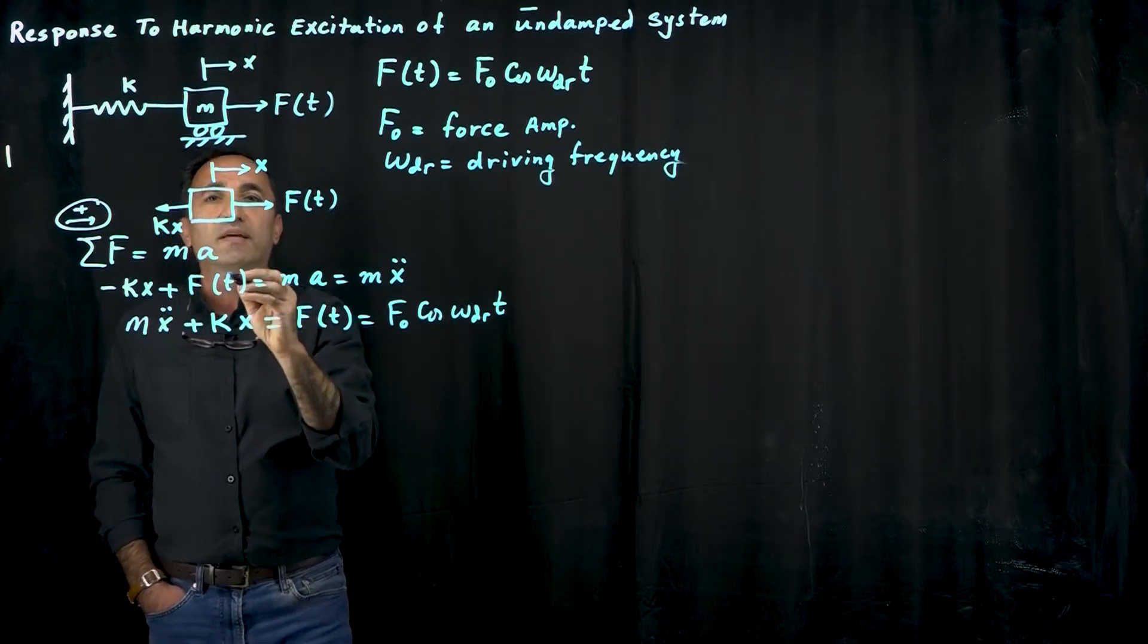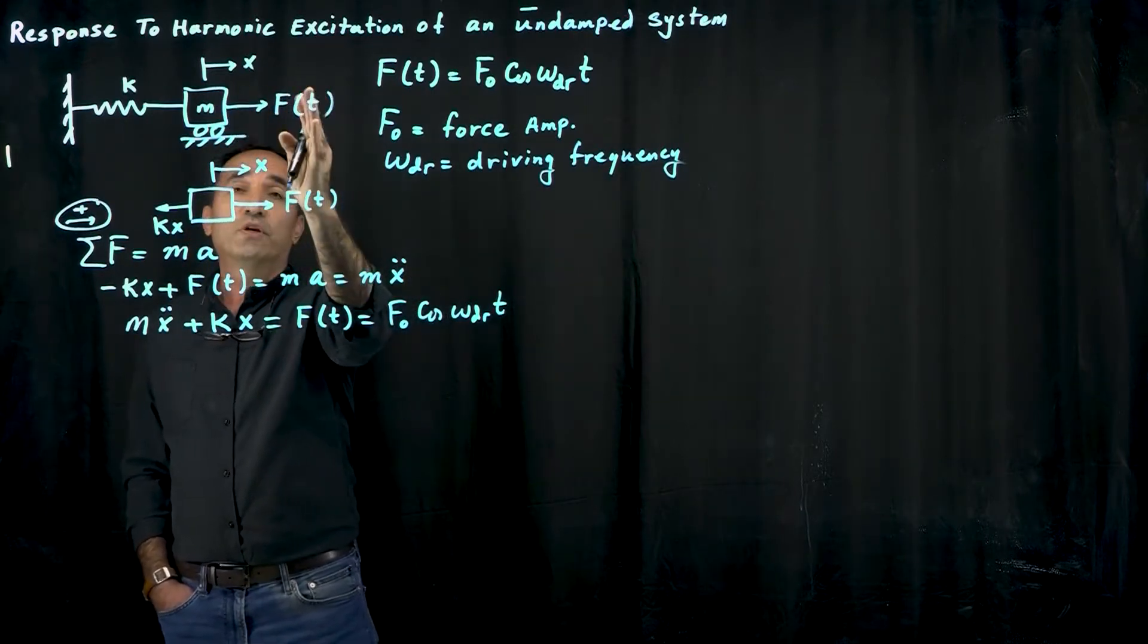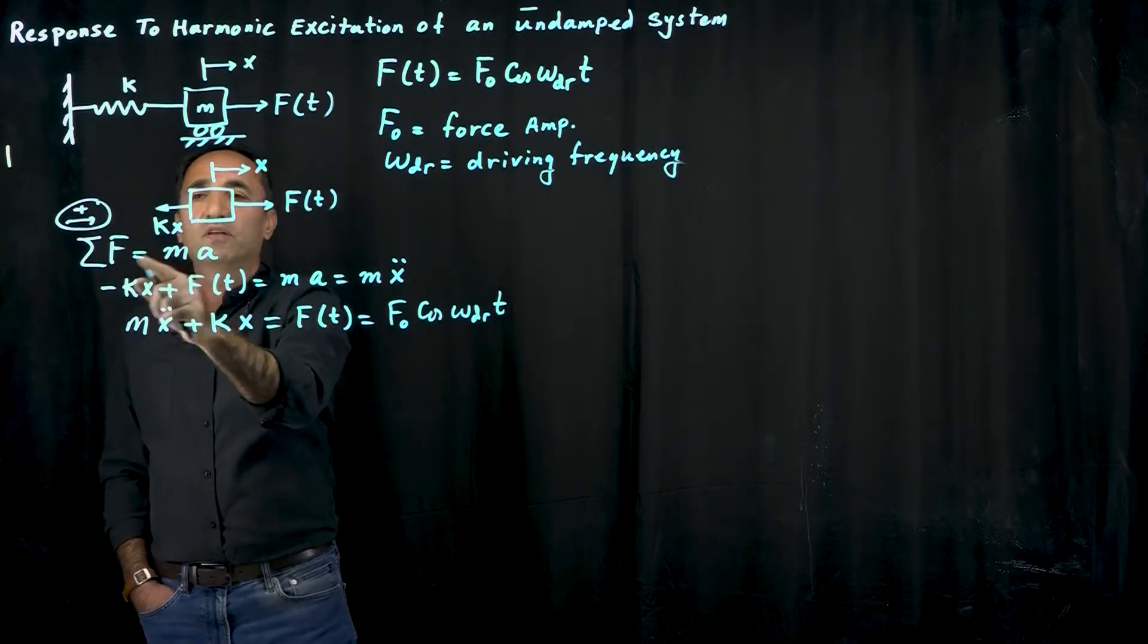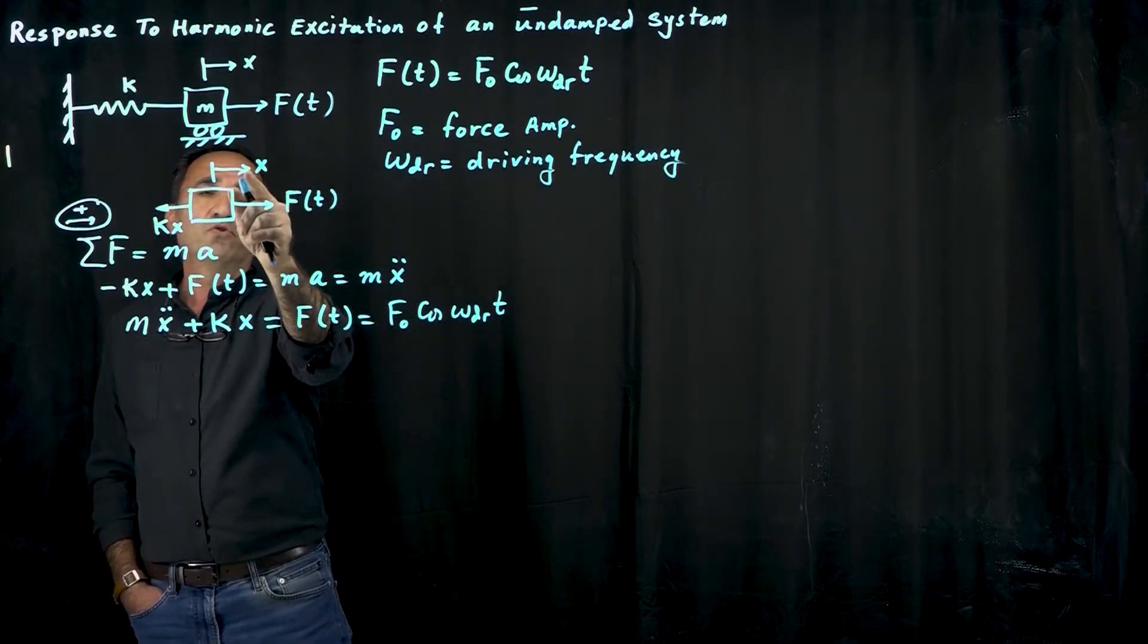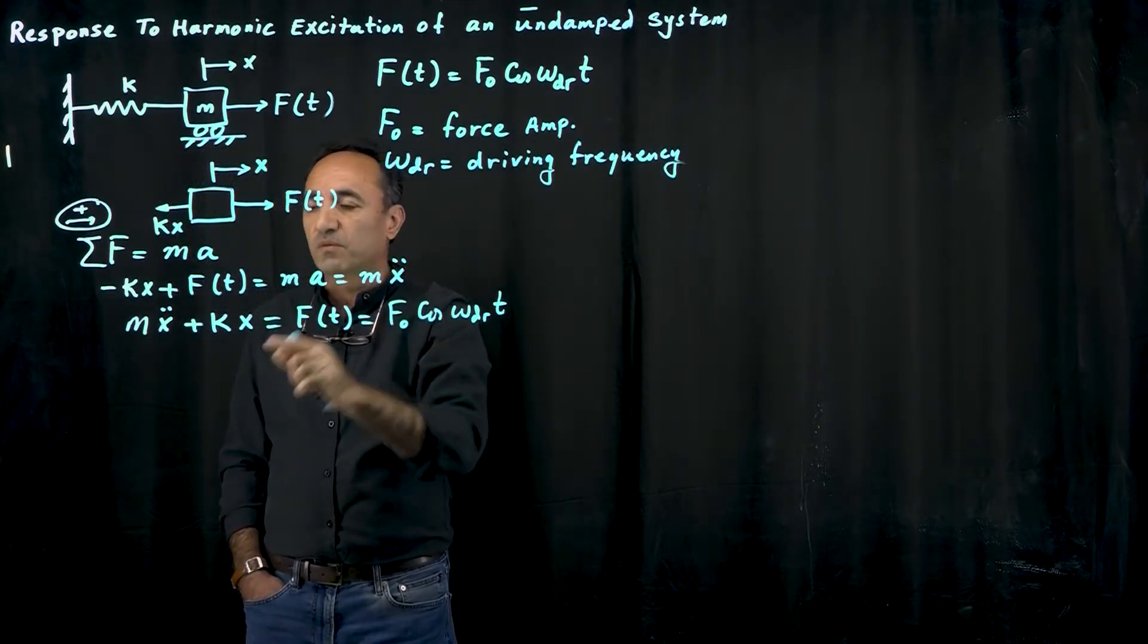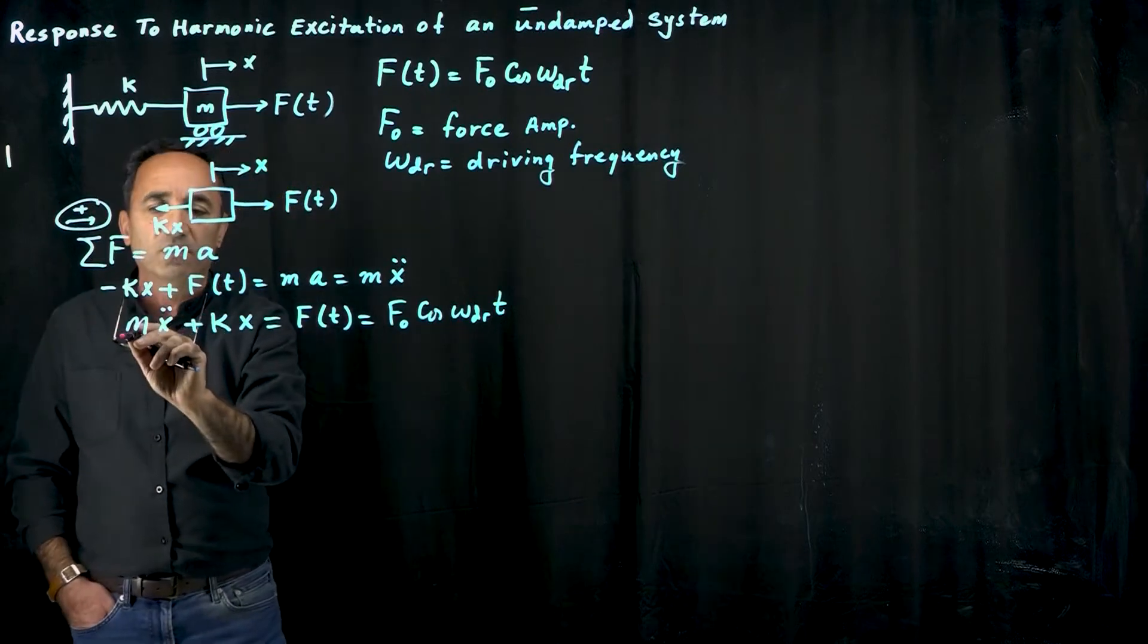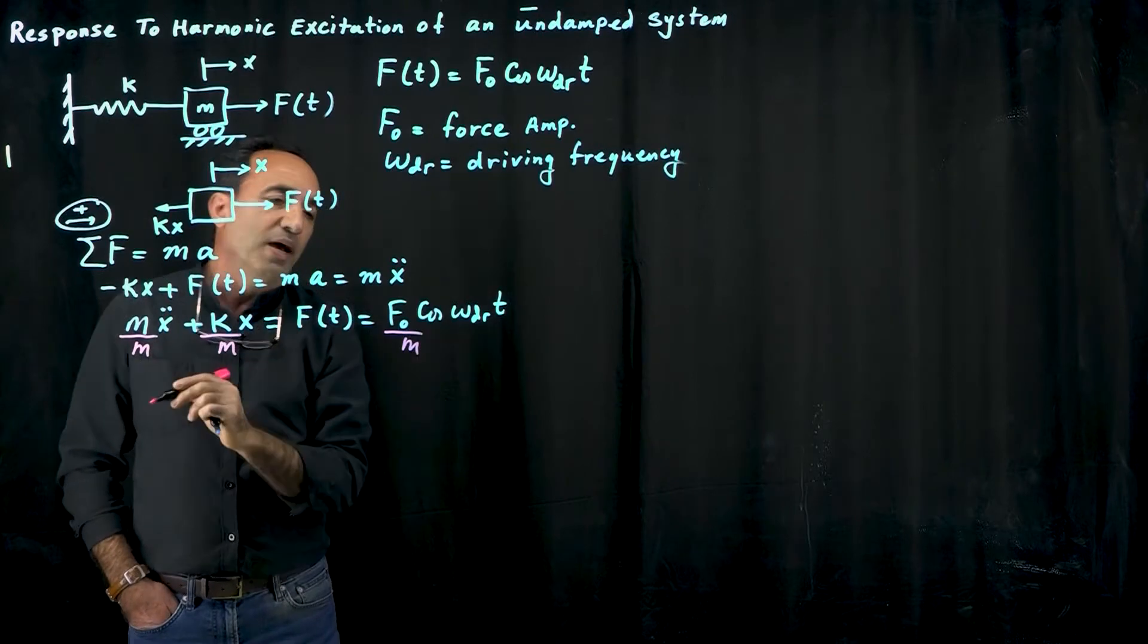Let's draw a free body diagram of our system. Here we have the free body diagram if we disturb this guy due to the force. We'll see the force kx coming from the spring. Just apply the second law F equals ma, and using the positive direction as shown, we'll get the following equation: mass times acceleration is mass times second derivative of x. This becomes our differential equation. The next step is to normalize this.